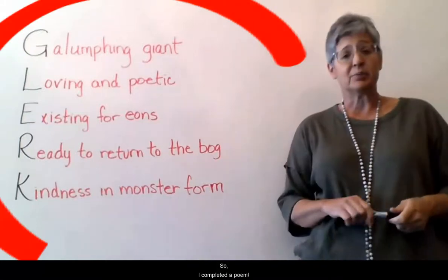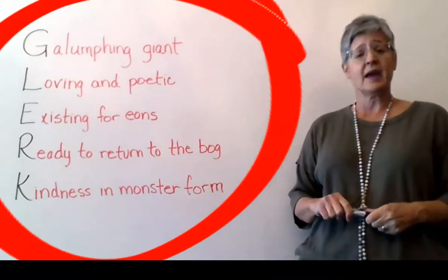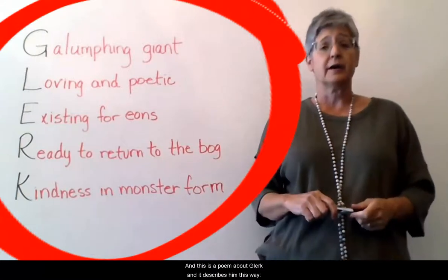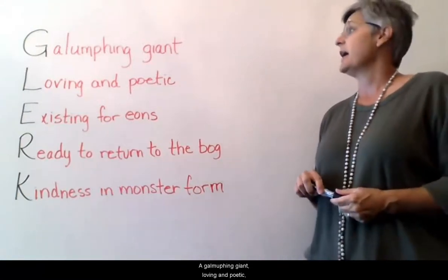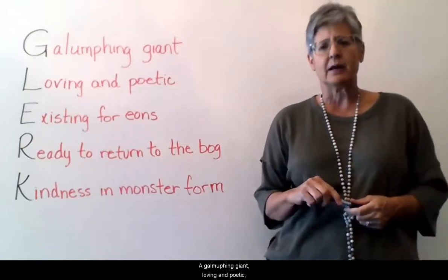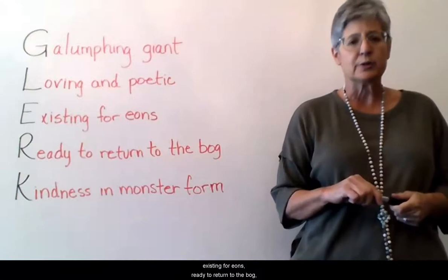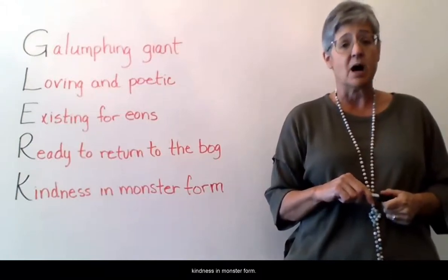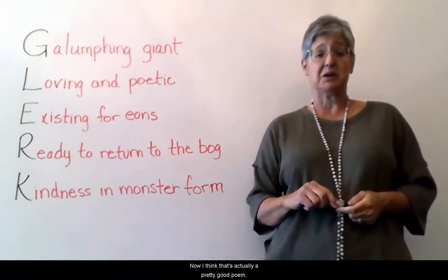So I completed a poem. Let's read the whole thing. This is a poem about Glurk and it describes him this way: 'A galumphing giant, loving and poetic, existing for eons, ready to return to the bog, kindness in monster form.' Now I think that's actually a pretty good poem.